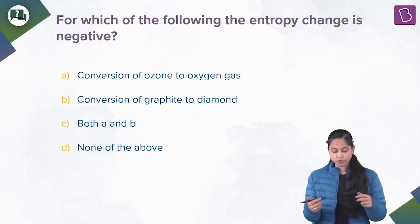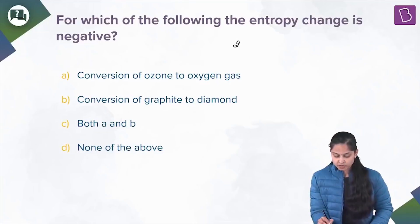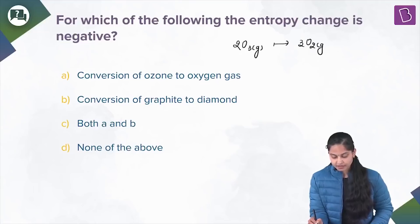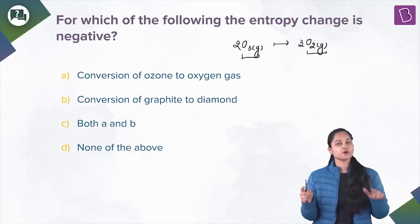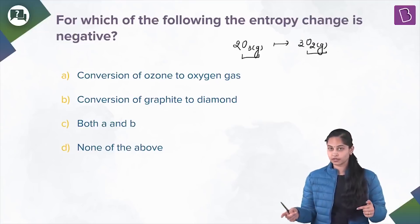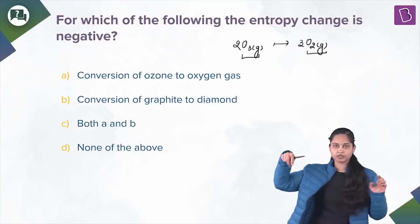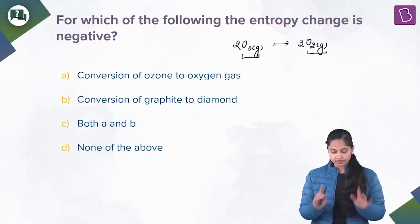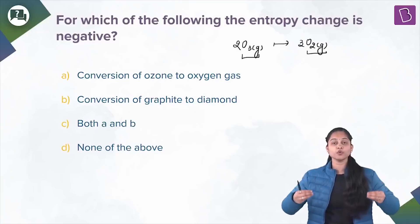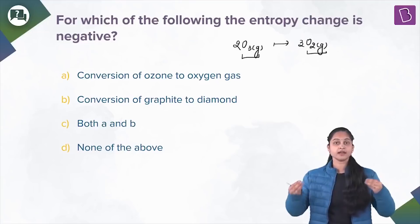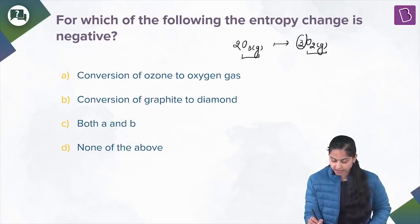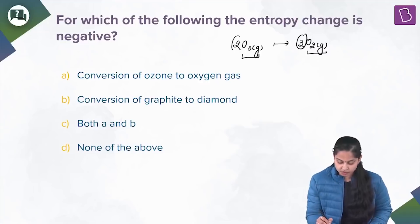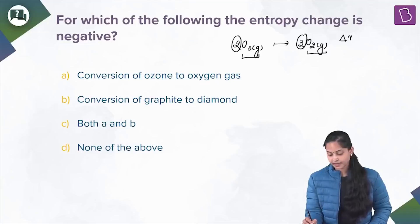For option A — conversion of ozone to oxygen gas: 2O₃(g) → 3O₂(g). Both reactant and product are in the gaseous phase. The delta NG value is greater than zero because the number of gaseous moles of the product is three and of the reactant is two.